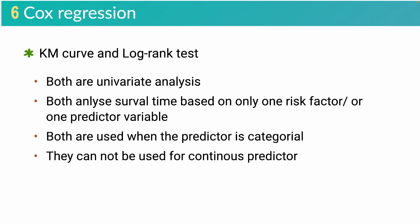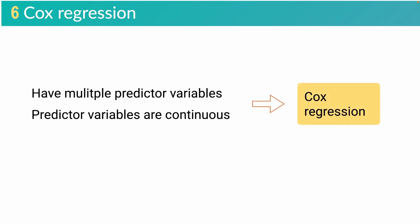So far, we have learned Kaplan-Meier or KM curve and log-rank test. Both KM curve and log-rank test are univariate analyzers. They can only be used to analyze one risk factor or a single predictor variable, and they can only be used for categorical predictor variables — they cannot be used for continuous predictors. If you want to perform a survival analysis with multiple predictor variables, or if the predictor variables are continuous, you need to use Cox regression.